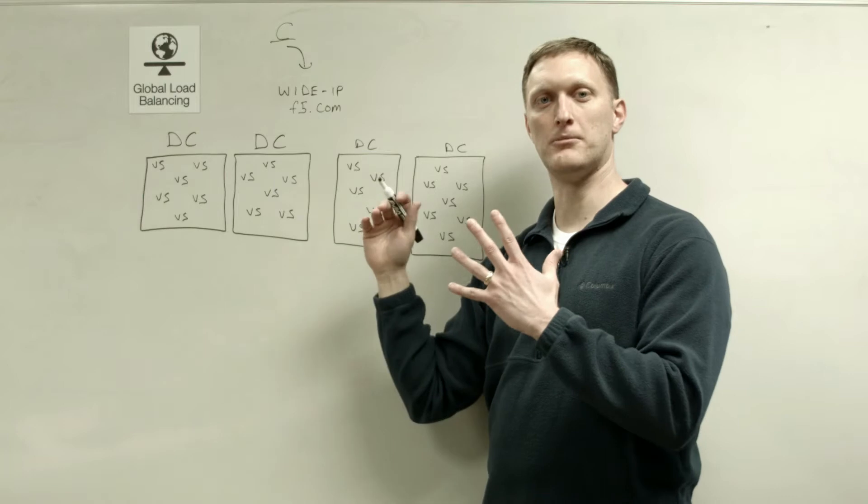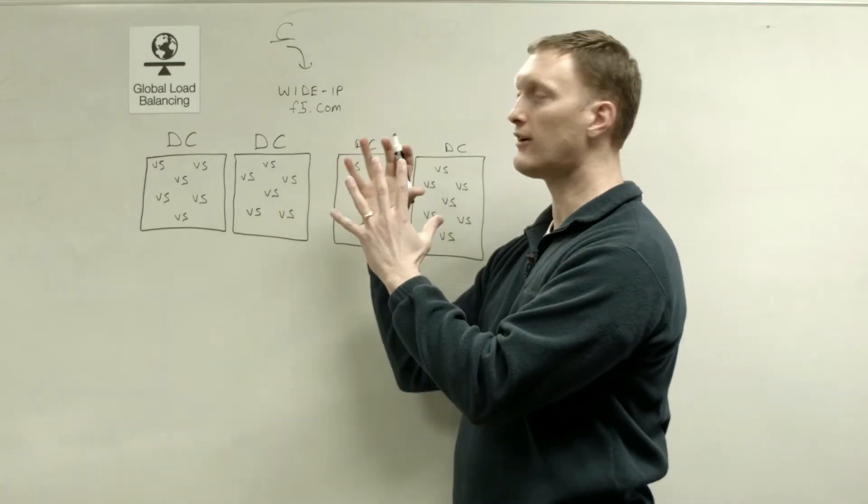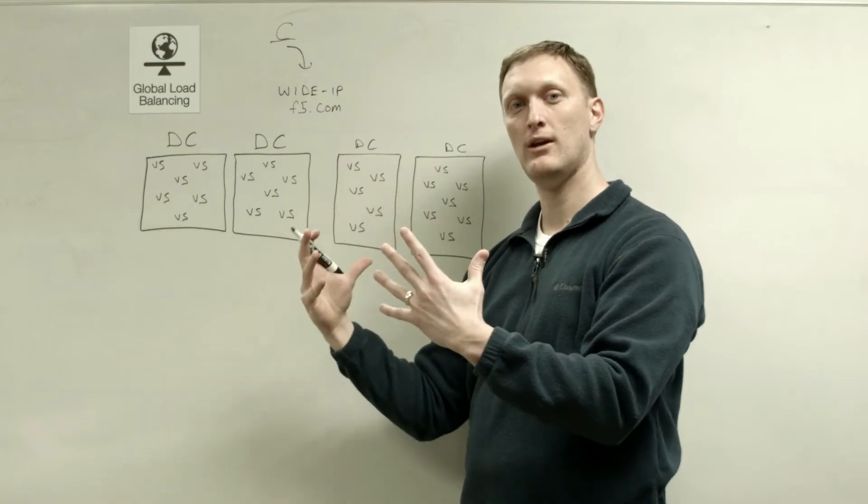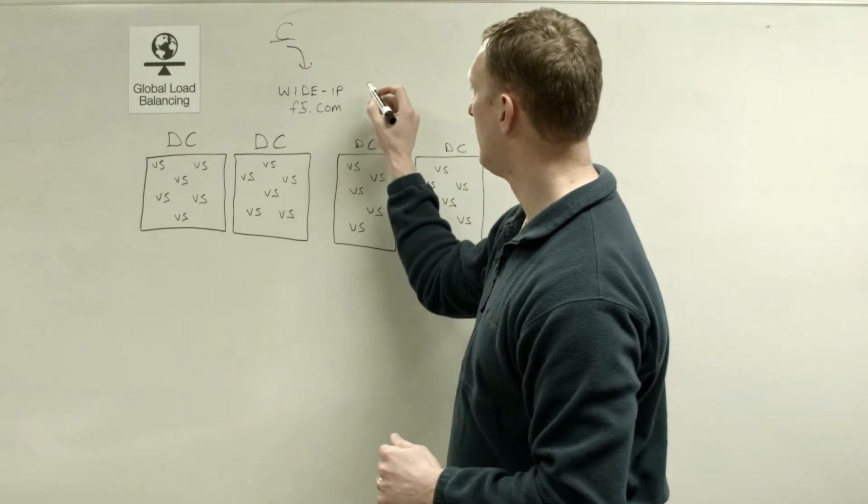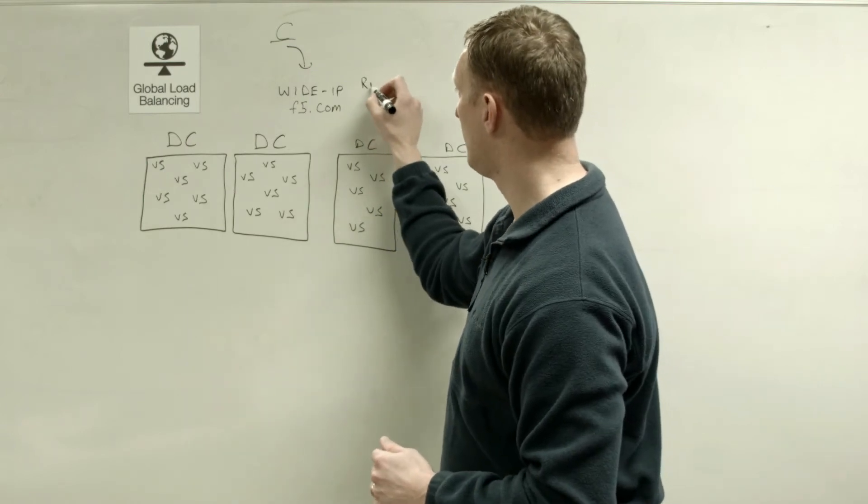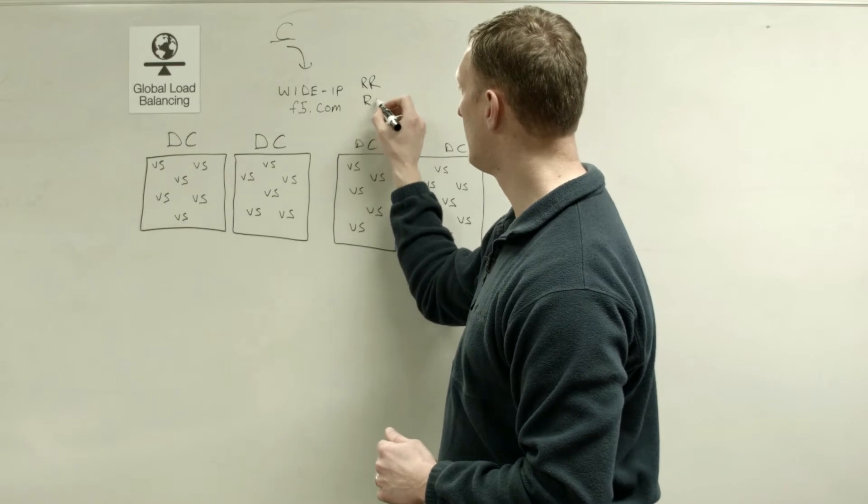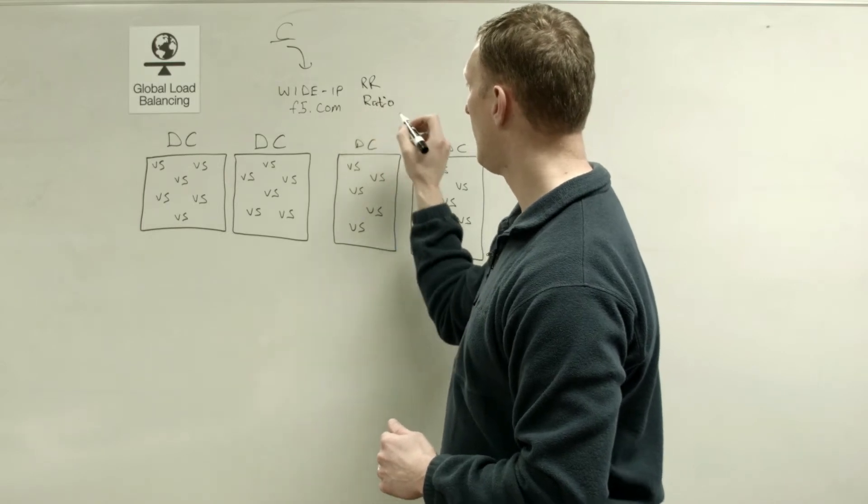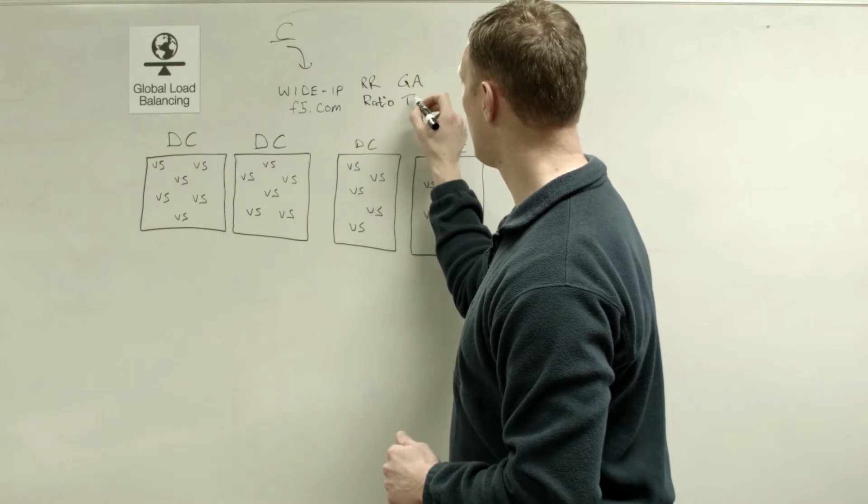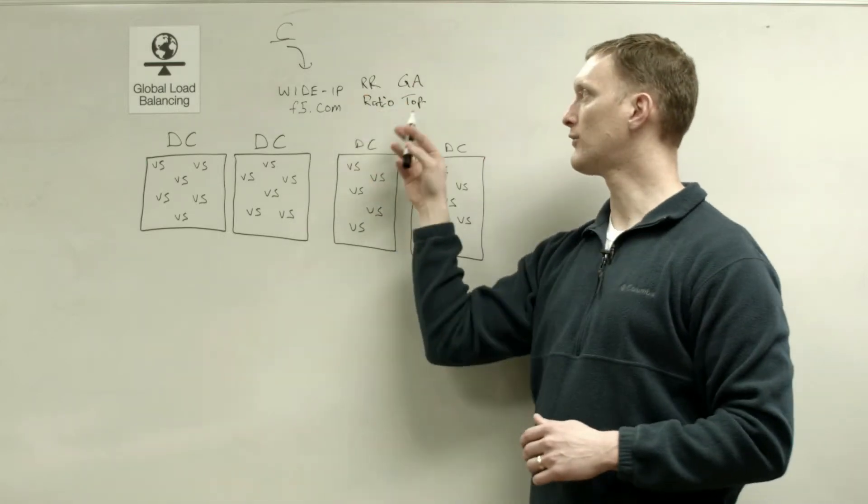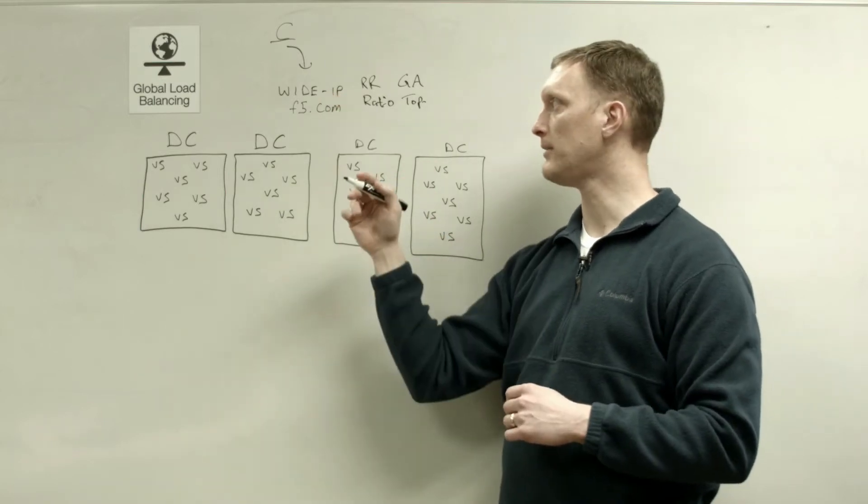And so let's say you request f5.com, well there are some load balancing algorithms that take place at the wide IP to figure out which wide IP pool you're going to select. And we talked about those in previous videos, but just to give you a quick reminder, there is the round robin, and I'll just put RR for round robin, there's the ratio, and then there's the global availability, and then there's the topology. Those are the four different load balancing algorithms that take place at the wide IP level.